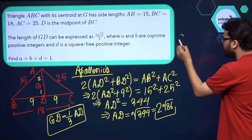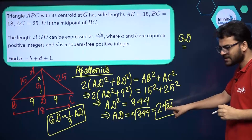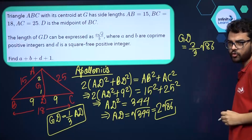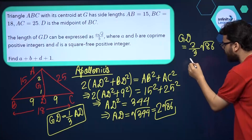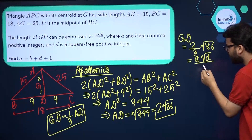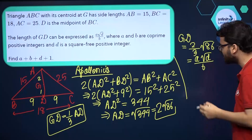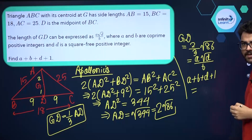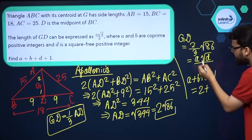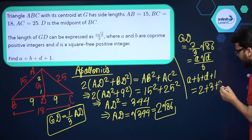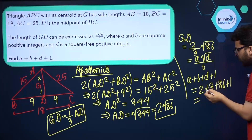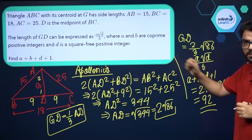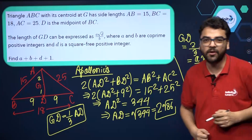So GD equals one-third of AD, which gives GD equal to 2 by 3 times root 86. This is expressed as A root D upon B, so comparing: A is 2, B is 3, and D is 86. Therefore A plus B plus D plus 1 equals 2 plus 3 plus 86 plus 1, which equals 92.